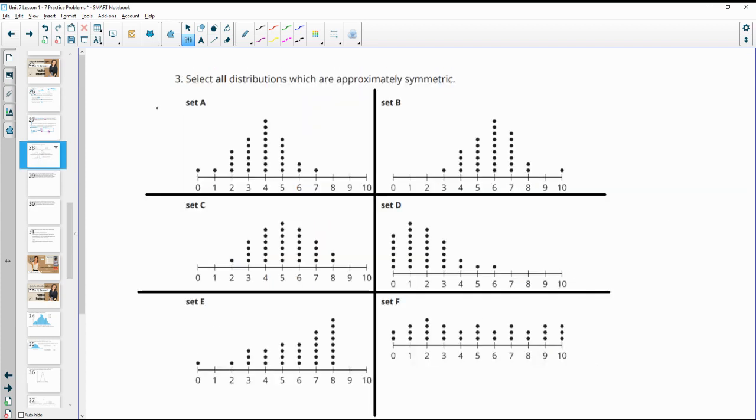Number three, select all distributions which are approximately symmetric. So that look pretty symmetric on both sides. Not exactly, but approximately symmetric. So set A looks pretty symmetric. It looks like it's got this kind of middle here. The data is about similar, a little bit different, but pretty similar. Same with set B. Same with set C. Pretty symmetric right around here. Looks about the same on each side.